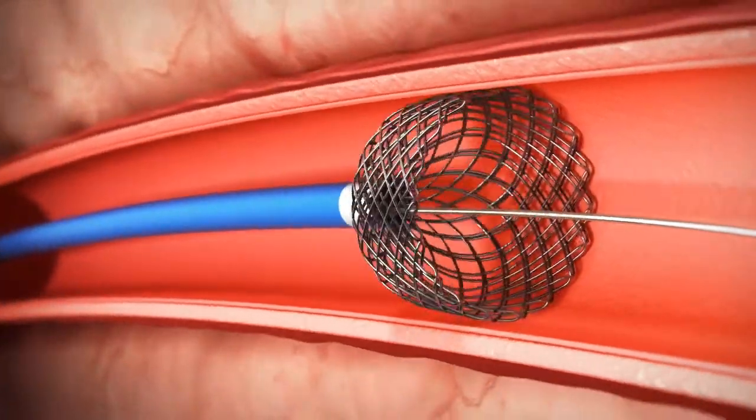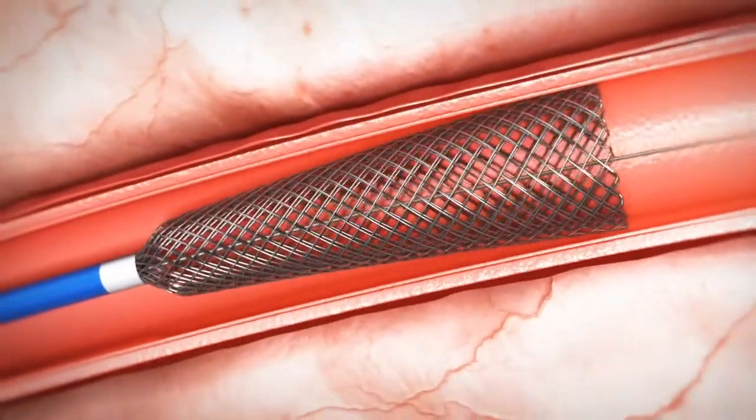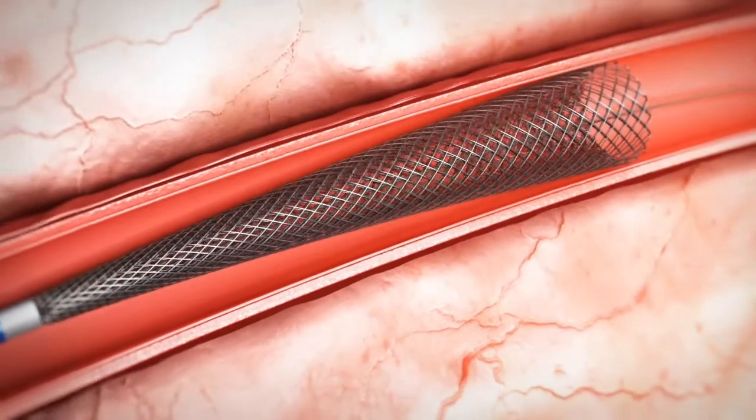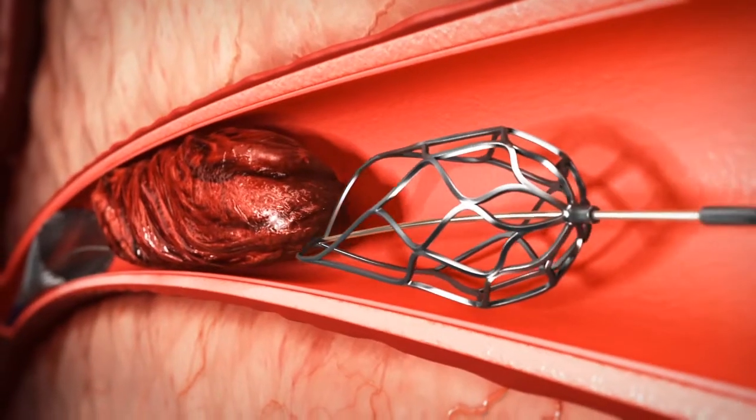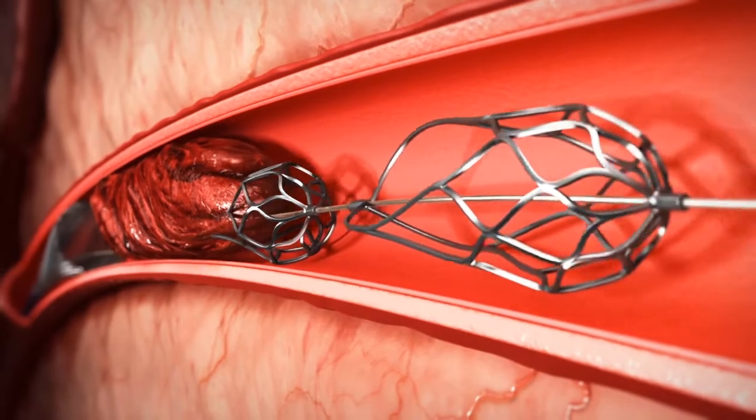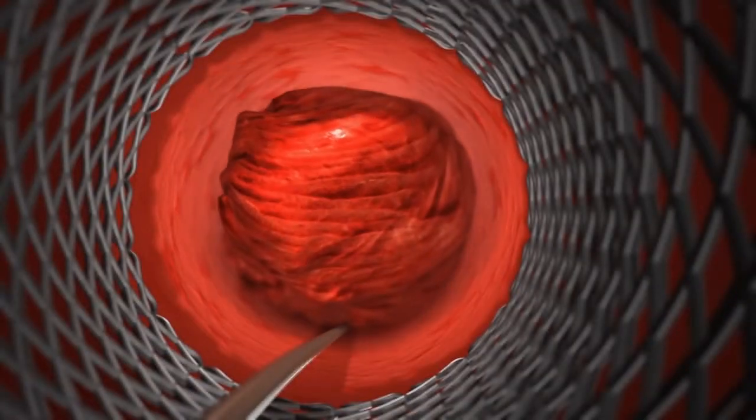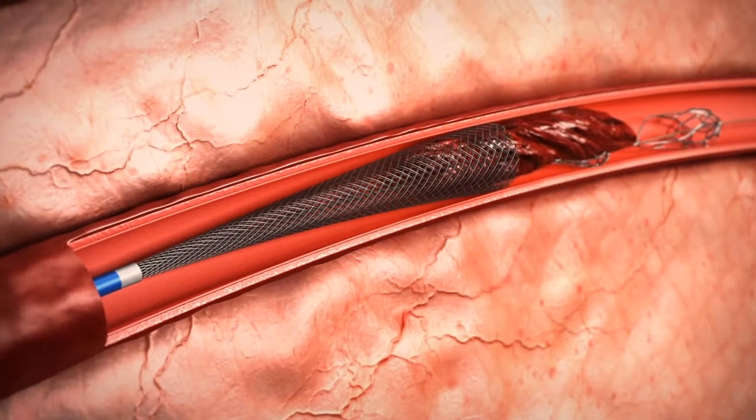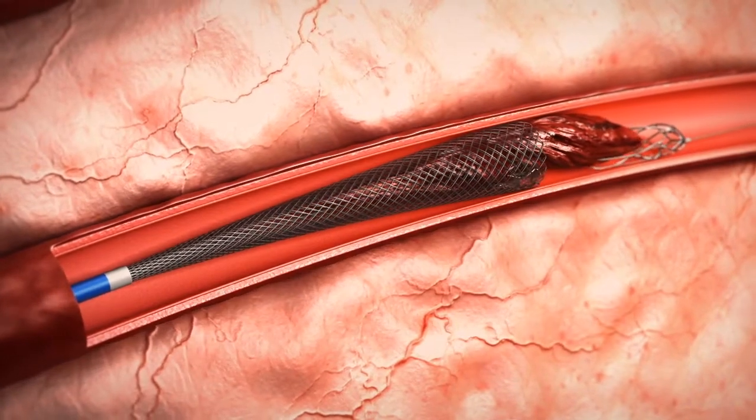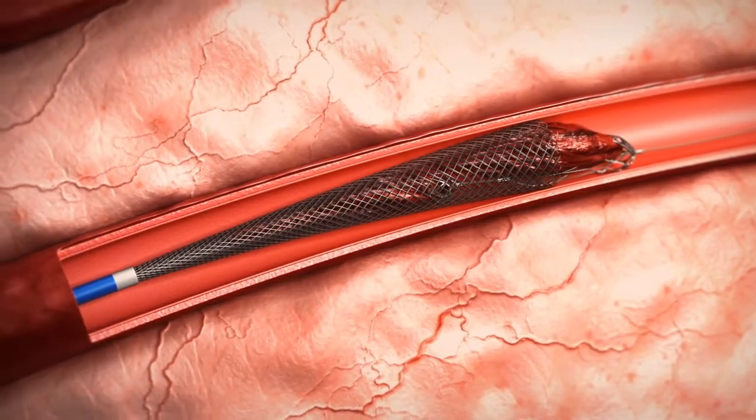The physician then releases the nitinol collection trumpet. As the physician pulls the wire with the cages towards the expanded trumpet, the clot is efficiently collected into the wire trumpet allowing extrusion of liquid and maceration of organized debris.